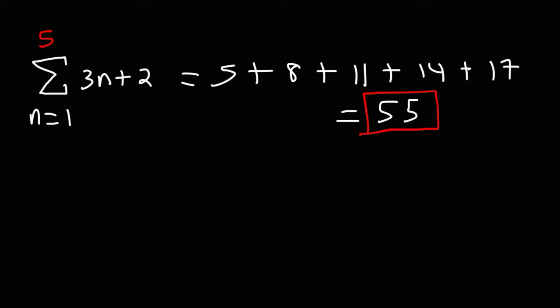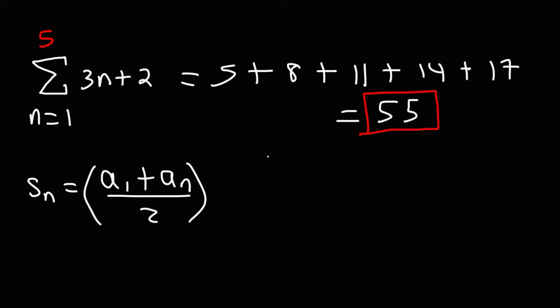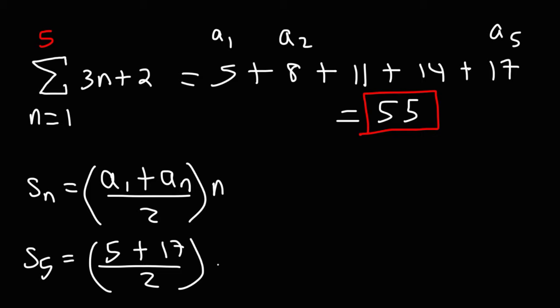Now because this is an arithmetic sequence, we can also use another formula to calculate the sum. The partial sum of an arithmetic sequence is S sub n equals the first term plus the last term divided by 2 — basically the average of the first and last terms times the number of terms. The first term A sub 1 is 5, the last term A sub 5 is 17, and there are 5 terms. 5 plus 17 is 22, divided by 2 is 11. Multiply 11 by 5 and we get the sum of the sequence, which is 55.